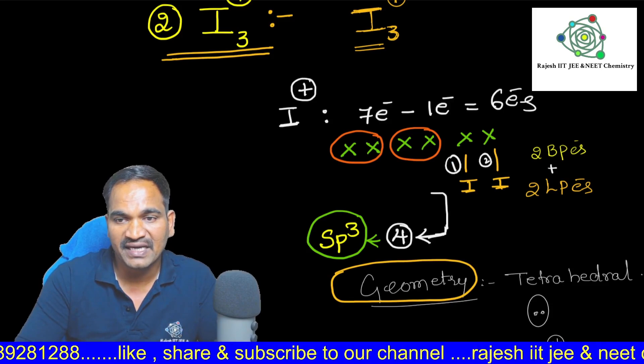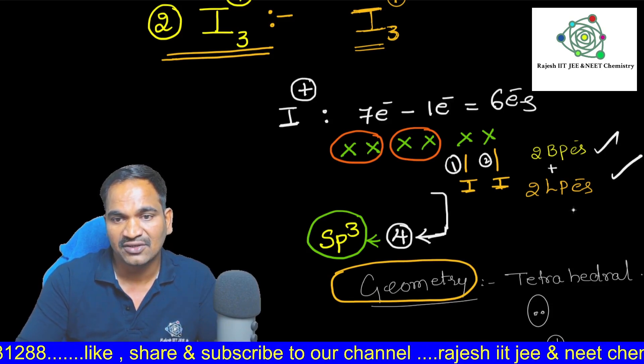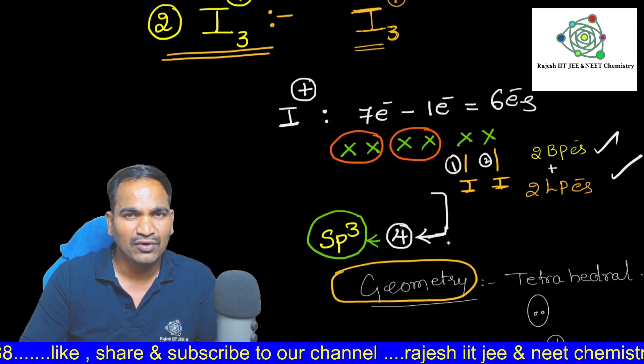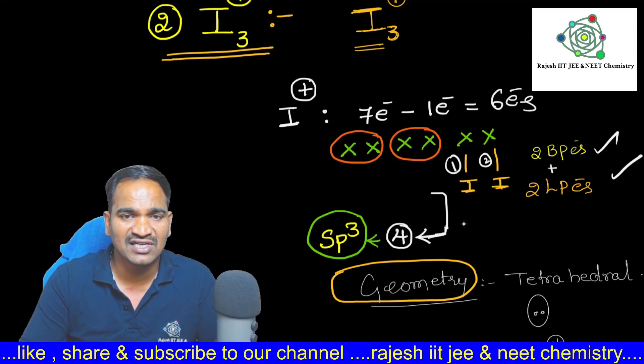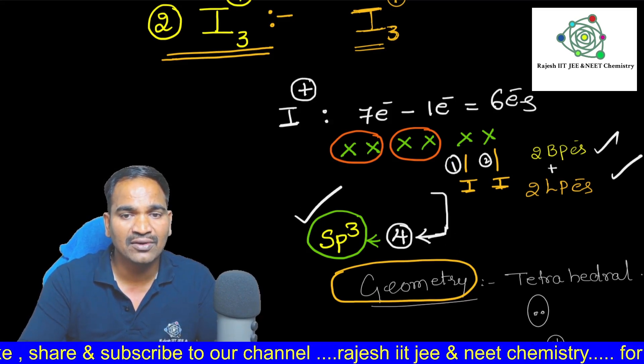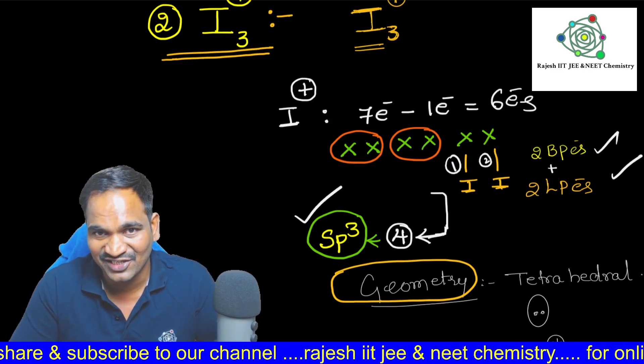2 bond pairs, 2 lone pairs. Total 2 plus 2, 4. 4 means what is the hybridization of the central atom in this molecule? SP3 hybridization.